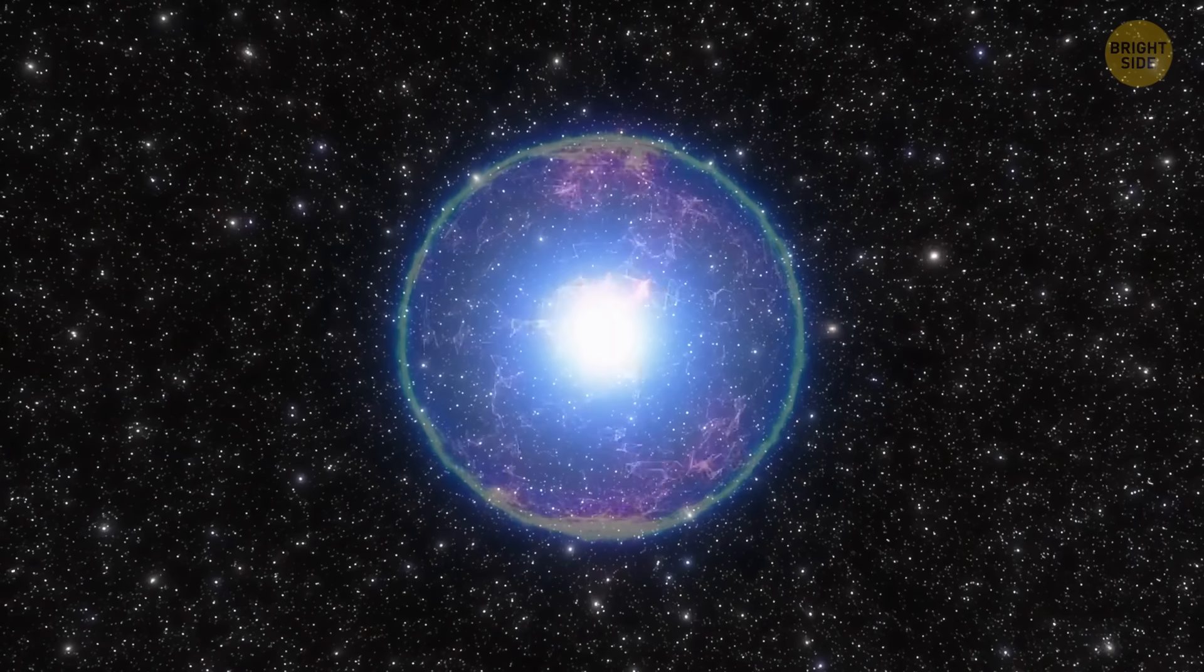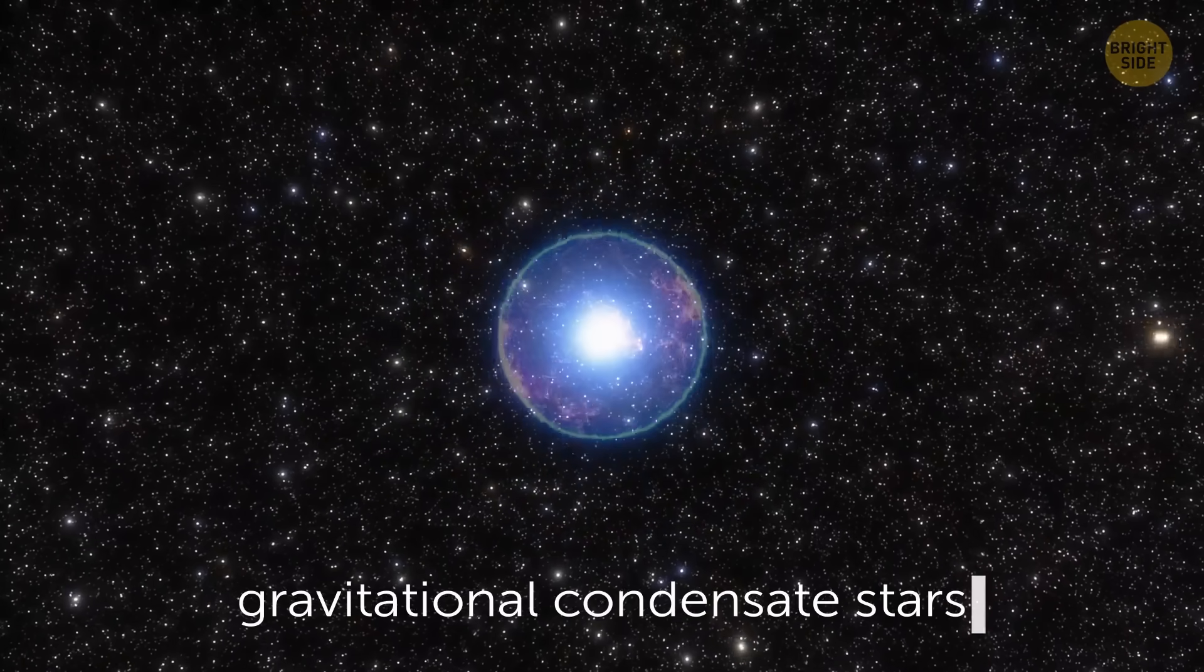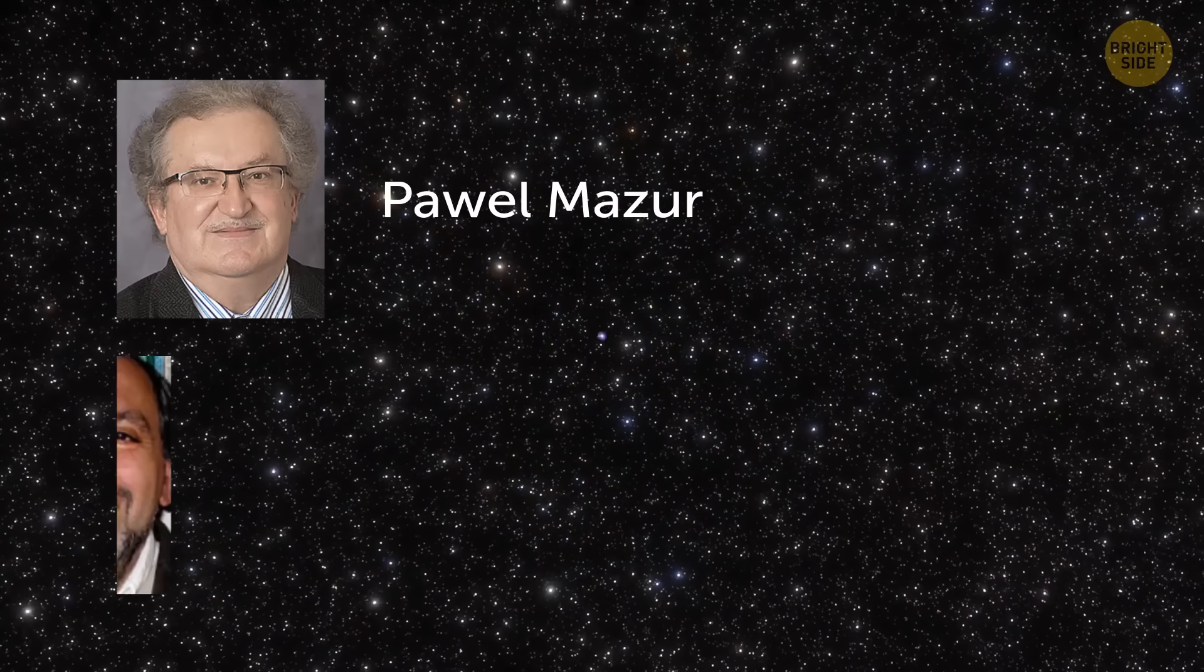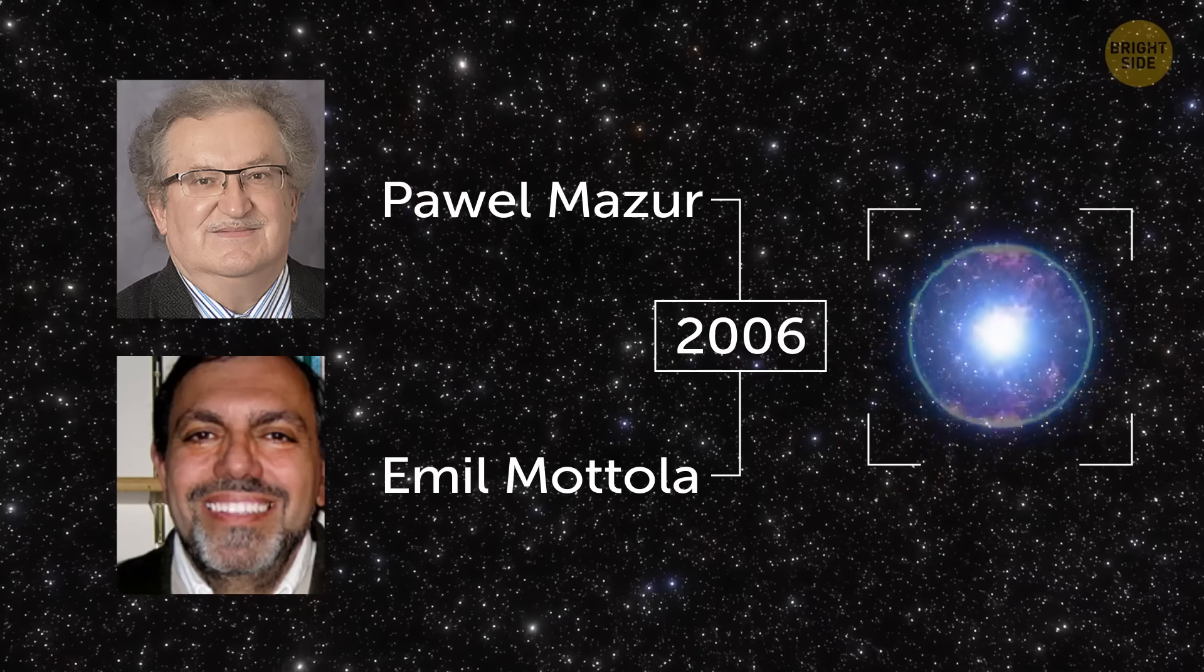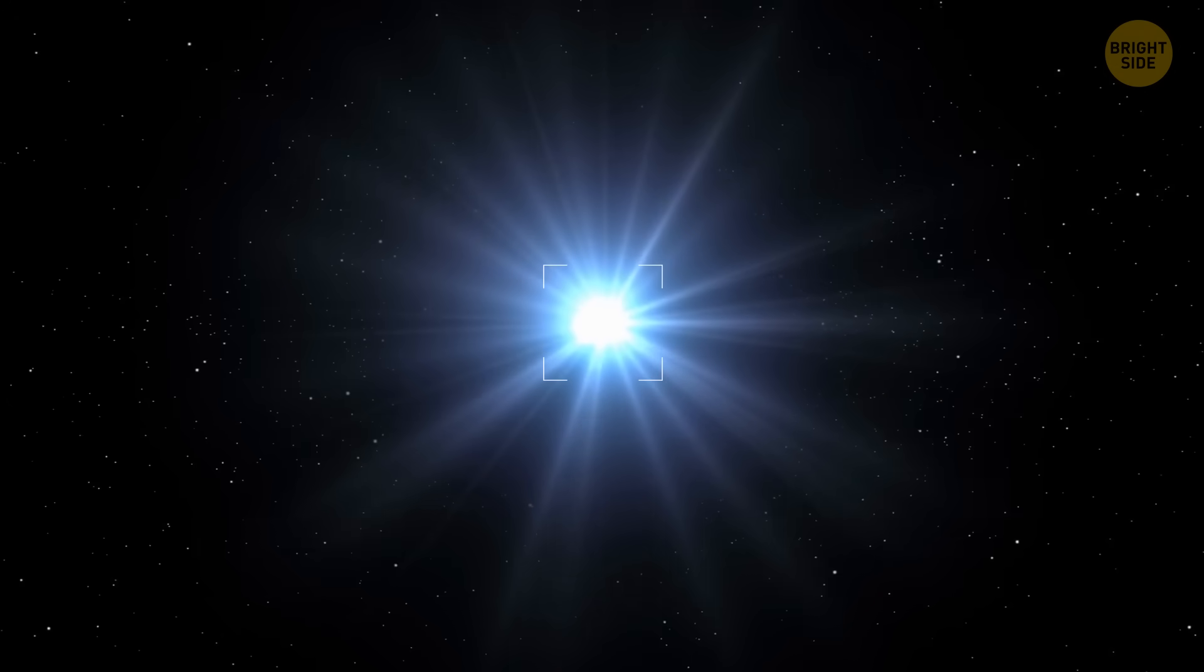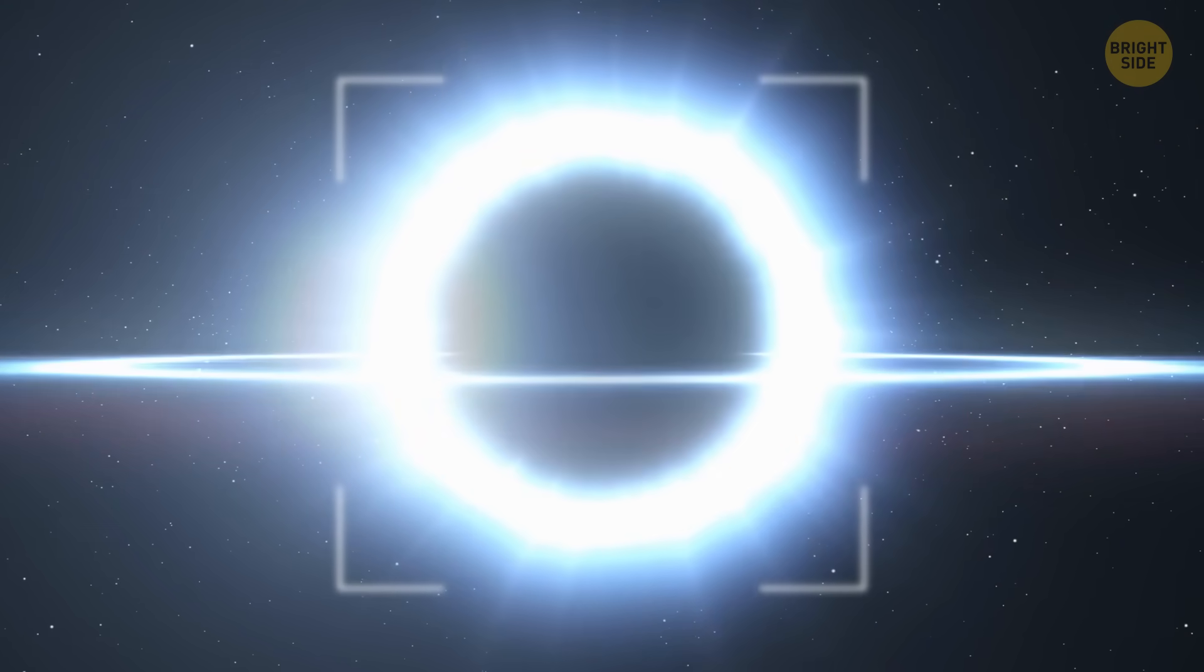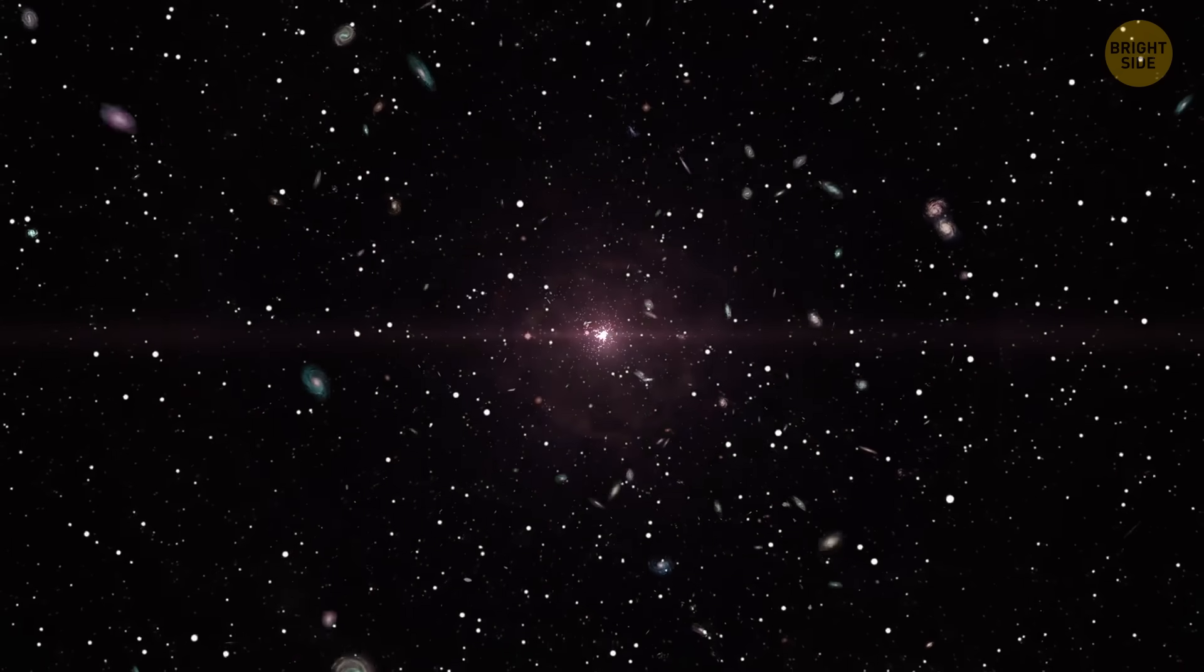This name stands for gravitational condensate stars. Gravastars were dreamed up by two physics professors, Powell Mazur and Emil Mottola, in 2006. They tried to think what else, besides black holes, could happen when a massive star collapses on itself. That's how they created this alternative.